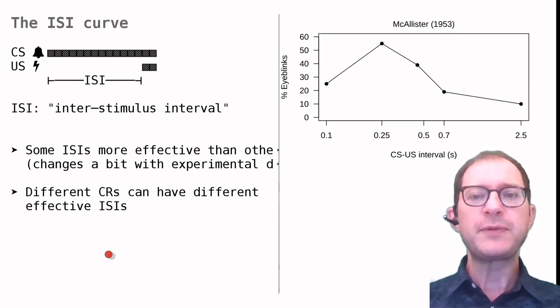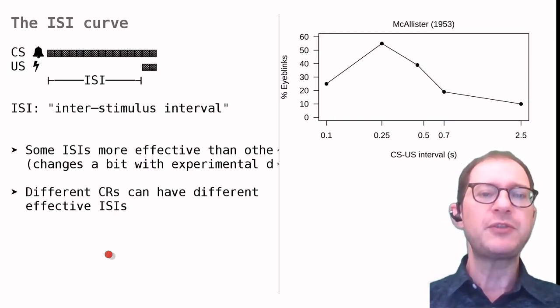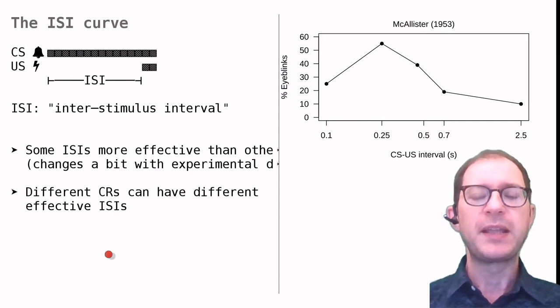In this graph, we see results from an eyeblink conditioning experiment with humans. The CS was a sound and the US an air puff. The horizontal axis shows the ISI, that is, the delay between the beginning of the sound and the air puff. The vertical axis shows the percentage of trials in which people blinked, after 20 training trials. As we can see, an ISI of about a quarter of a second worked best.